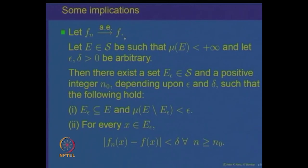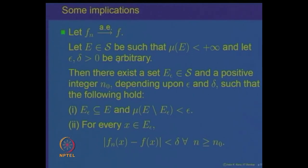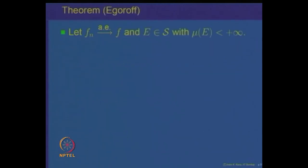So this proves the claim that if F_n converges to F almost everywhere and μ(E) is finite, then for every epsilon and delta we can find a subset E_epsilon inside E such that μ(E \ E_epsilon) < epsilon and |F_n(x) − F(x)| < delta for every n ≥ N_0 on E_epsilon. As a consequence of this, we prove Egorov's theorem.